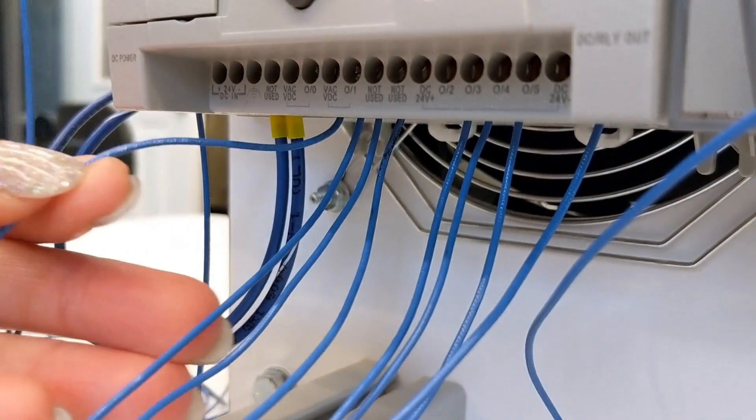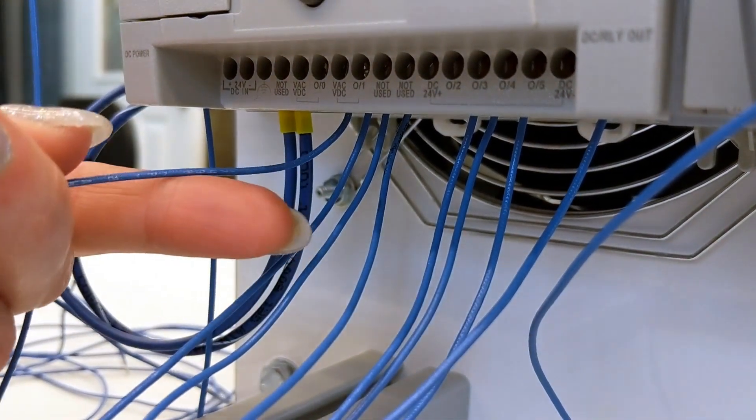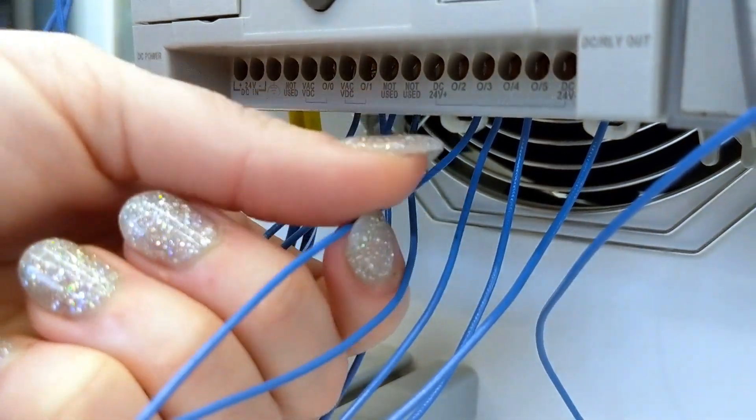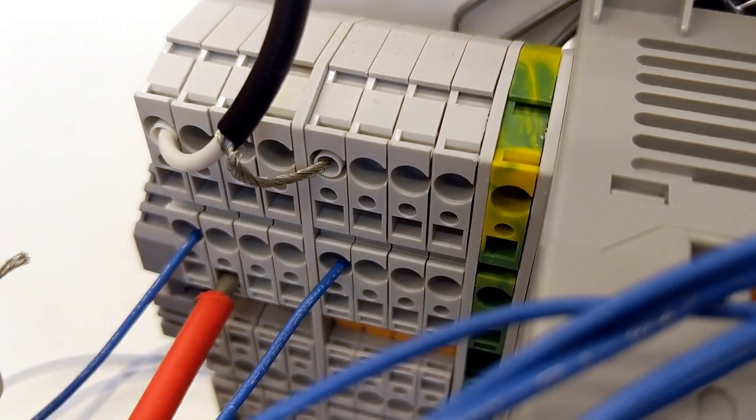Now I'm going to grab the wires I connected to the two VACVDC terminals and the DC24V plus and connect them to the plus 24 volt terminal block.